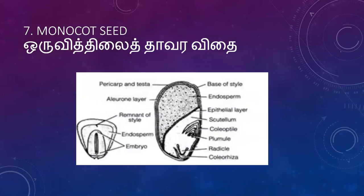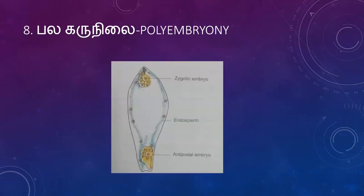The monocot seed diagram — in the monocot seed, the coleoptile protects the plumule, and the coleorhiza protects the radicle. Then polyembryony — the development of many embryos from a single seed.